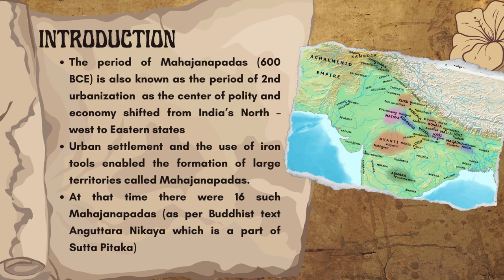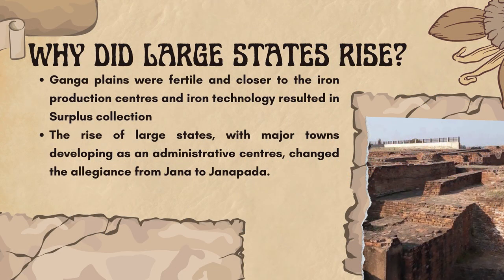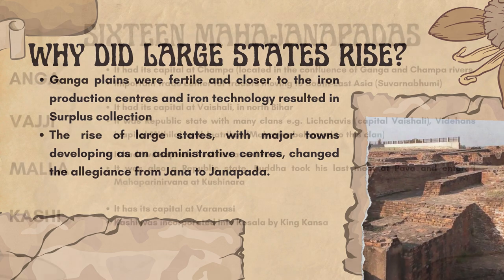As per the Buddhist text Anguttara Nikaya, which is a part of Sutta Pitaka, one may wonder why did the large states rise. The Ganga plains were fertile and closer to the iron production centers, and iron technology resulted in surplus collection. The rise of large states with major towns developing as administrative centers changed the allegiance from Jana to Janapada.